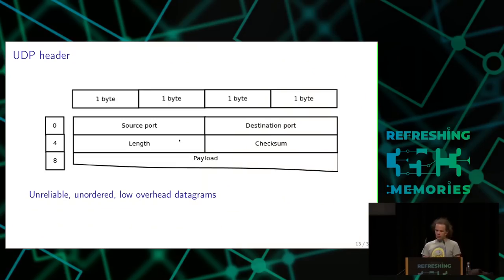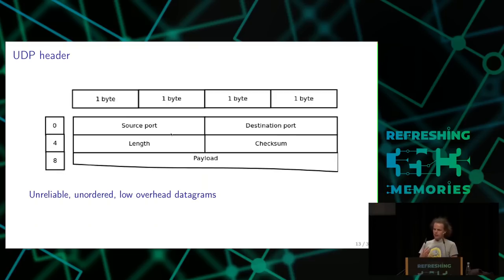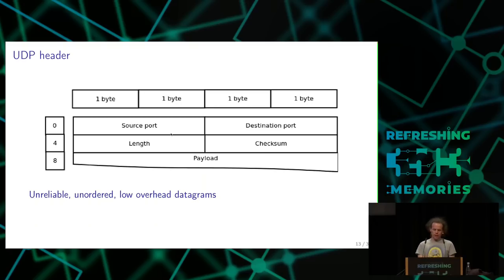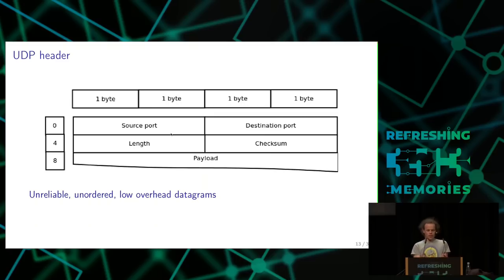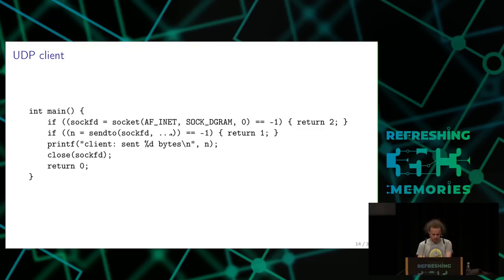Lass uns jetzt die nächste Ebene angucken, das ist die Transport-Ebene. Zuerst schauen wir uns UDP an. UDP ist nur 8 Byte lang und hat nur einen Quellport, einen Zielport, die Länge des gesamten UDP-Rahmens und eine Prüfsumme. Die Prüfsumme ist 16 Bit lang und enthält auch Informationen über Quelle und Zieladresse. UDP ist unzuverlässig und ungeordnet, aber dafür hat es einen geringen Verwaltungsaufwand. Es werden nur 8 Byte zur Datenmenge hinzugefügt, während IP schon mindestens 20 Byte hinzufügt.